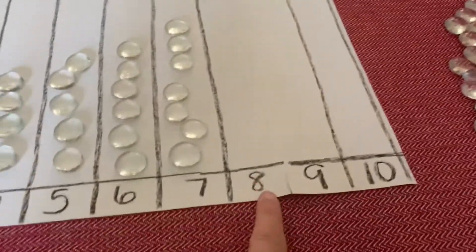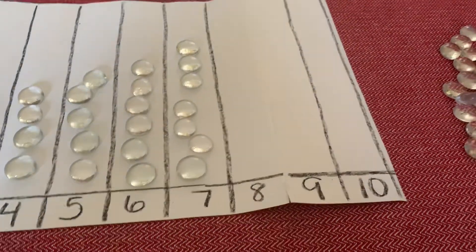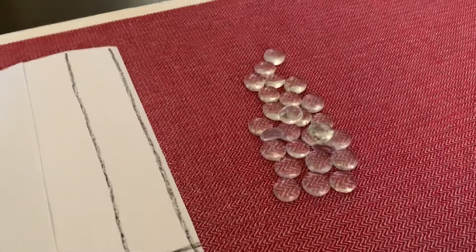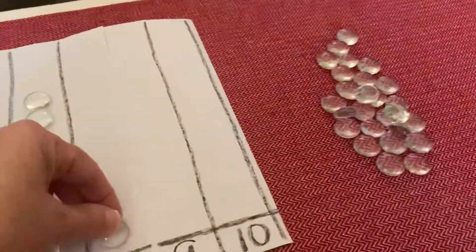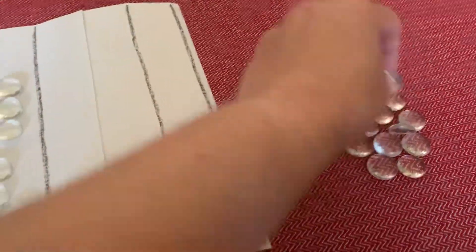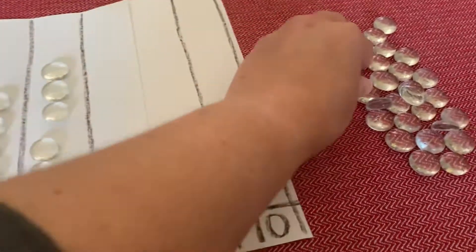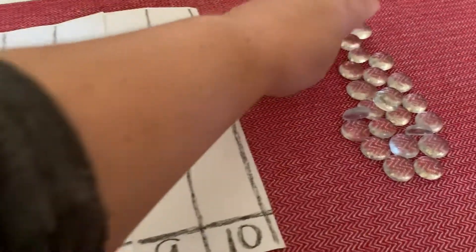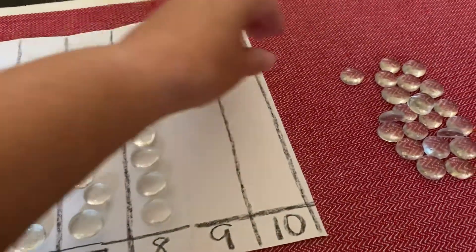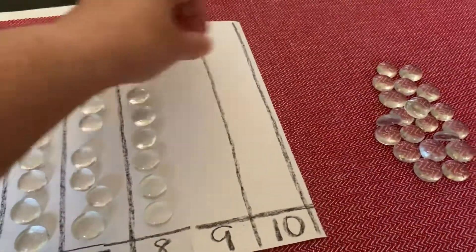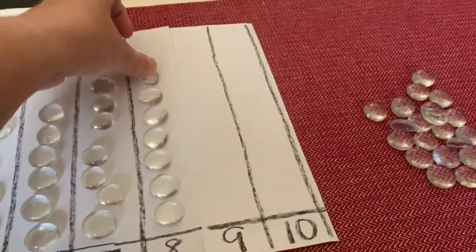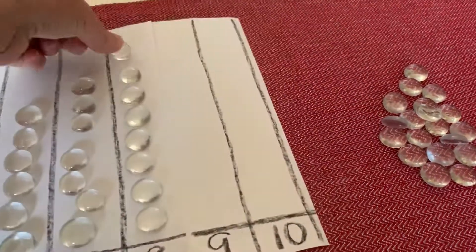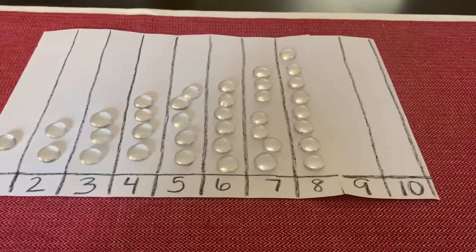All right boys and girls, what's the next number? The number 8. Here we go, 1, 2, 3, 4, 5, 6, 7, 8. You boys and girls are good counters.